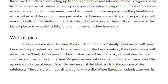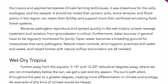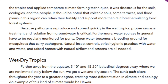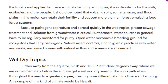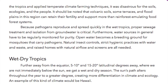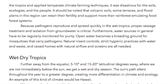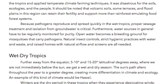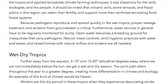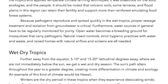The soils are almost all functionally infertile. When European colonists arrived in the tropics and applied temperate climate farming techniques, it was disastrous for the soils, ecologies, and the people. It should be noted that volcanic soils, some terraces, and floodplains in this region can retain their fertility and support more than rainforest-emulating food forest systems. Because pathogens reproduce and spread quickly in the wet tropics, proper sewage treatment and isolation from groundwater is critical.